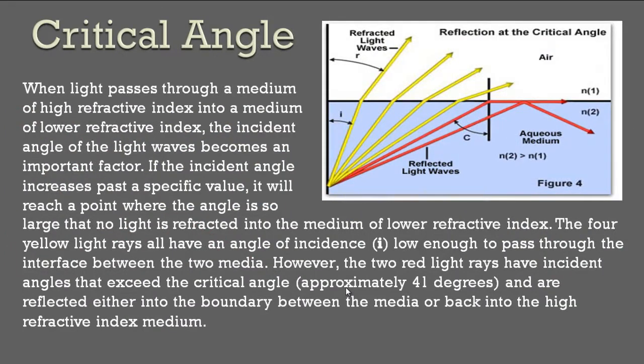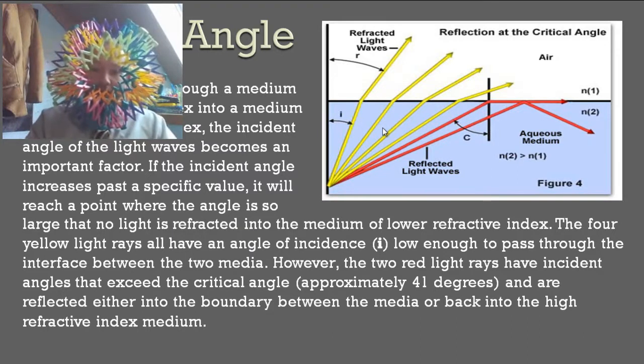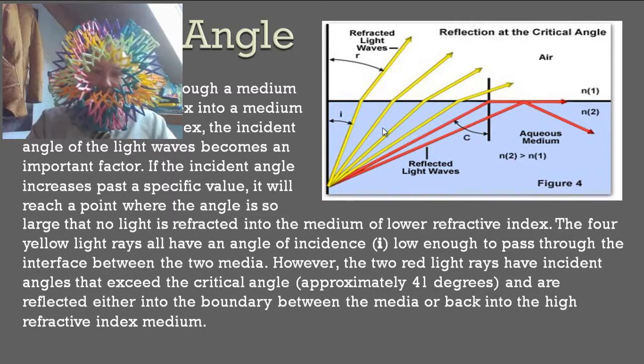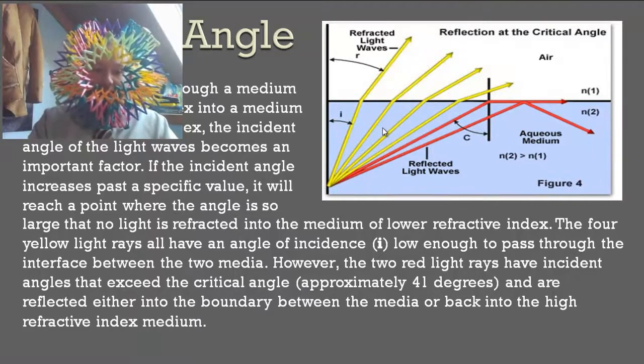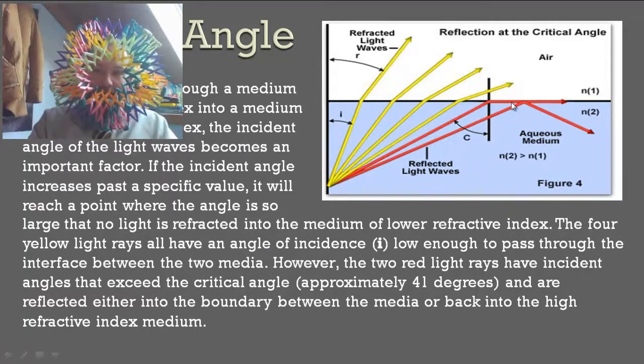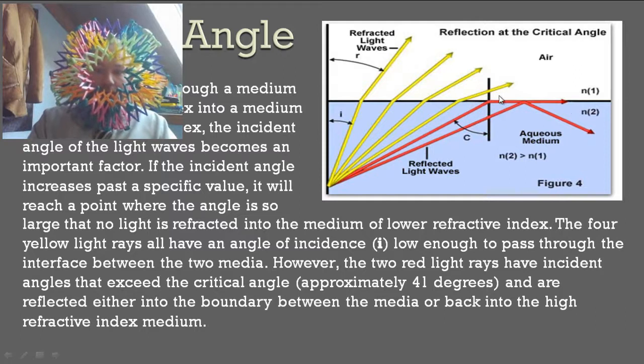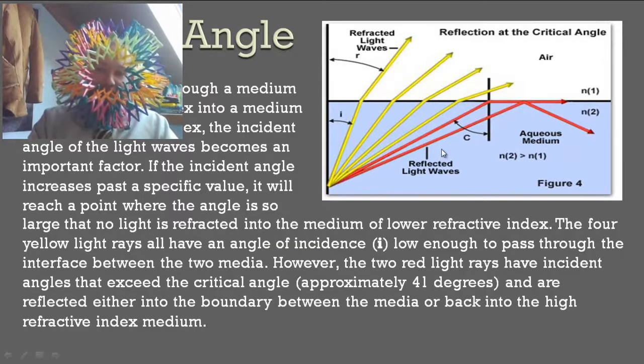Using refraction, you can also talk about a critical angle. When light passes through a medium of high refractive index into a medium of lower refractive index, the incident angle of the light waves becomes an important factor. If the incident angle increases past a specific value, it will reach a point where the angle is so large that no light is refracted into the medium of lower refractive index. The yellow light rays have an angle of incidence, which we're just going to call i here, low enough to pass through the interface between the two media.